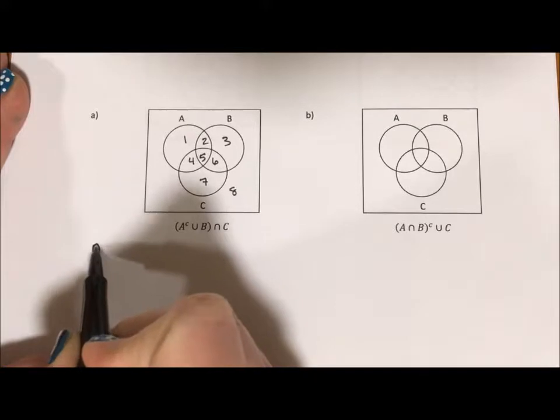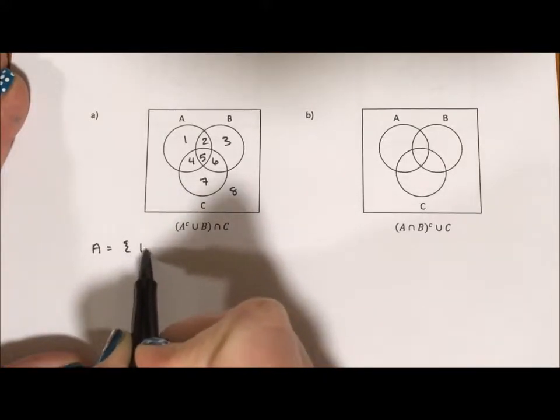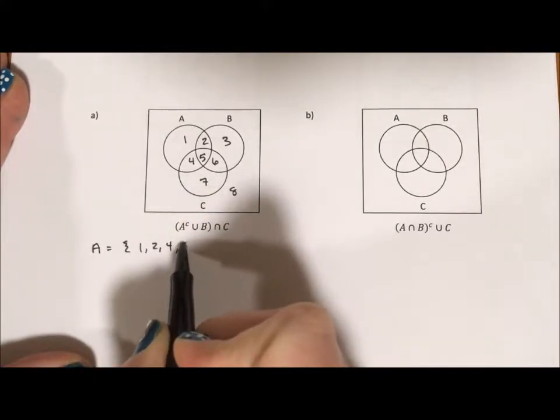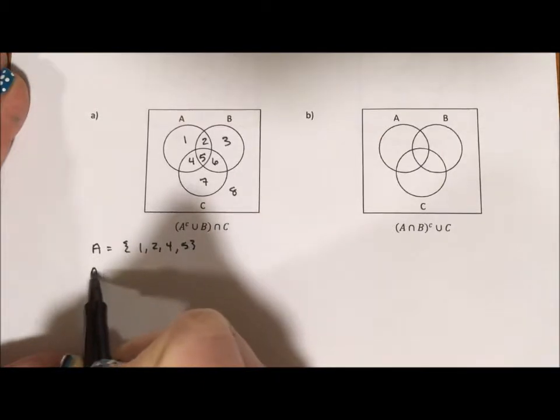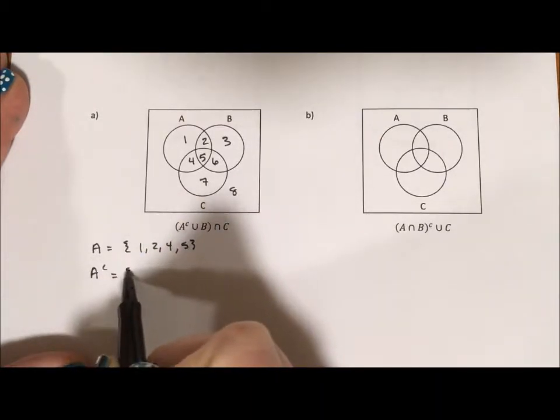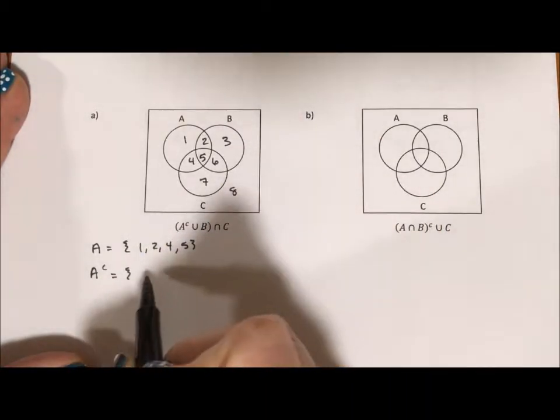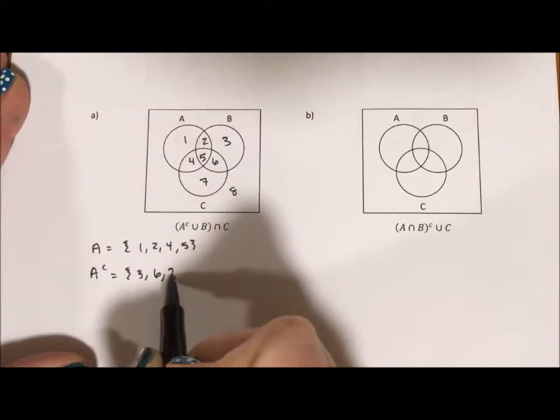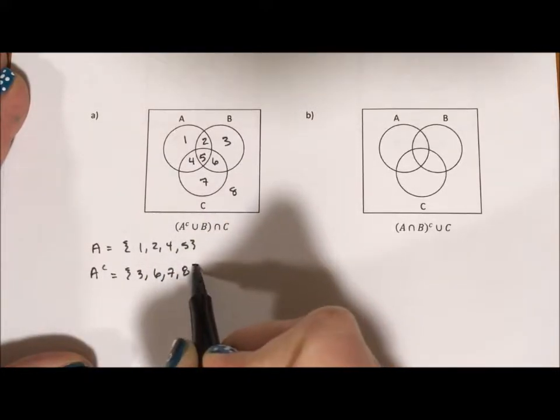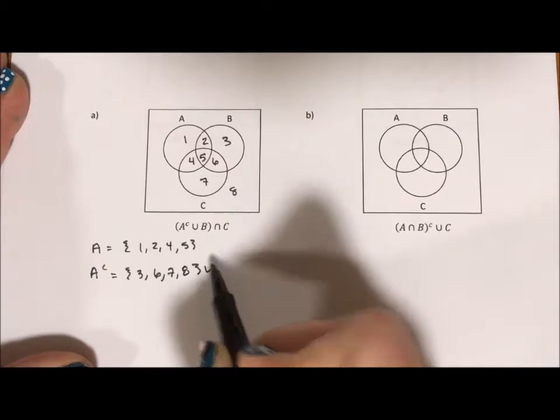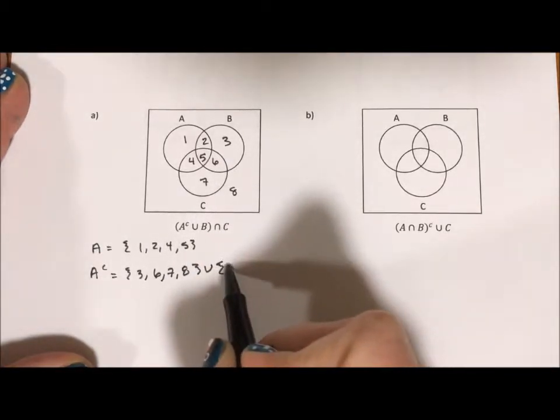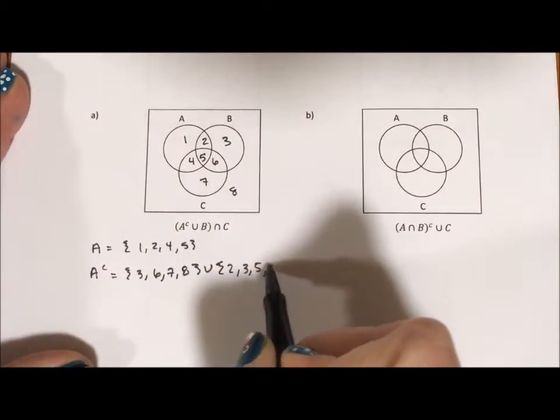So then A is 1, 2, 4, and 5. A complement is everything else. So 3, 6, 7, and 8. And we want to take that and make it a union with B. B is 2, 3, 5, and 6. So B is these four regions.